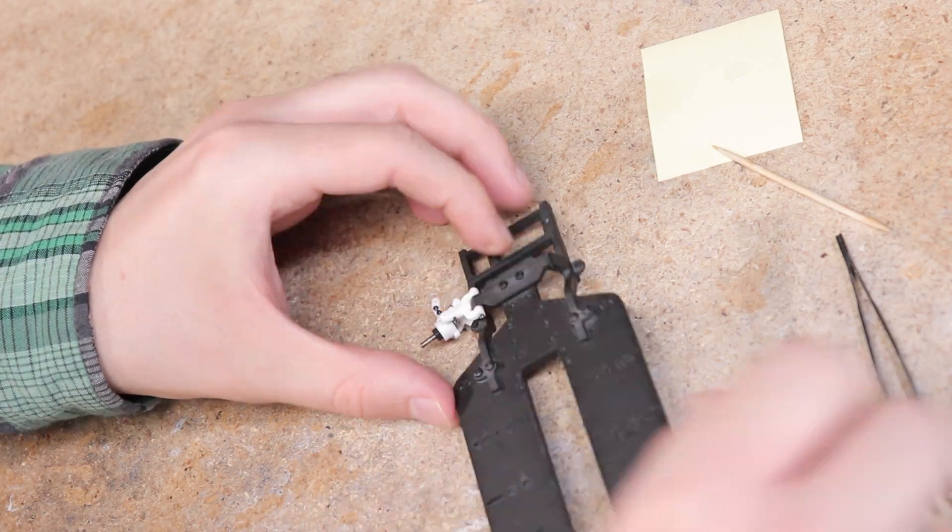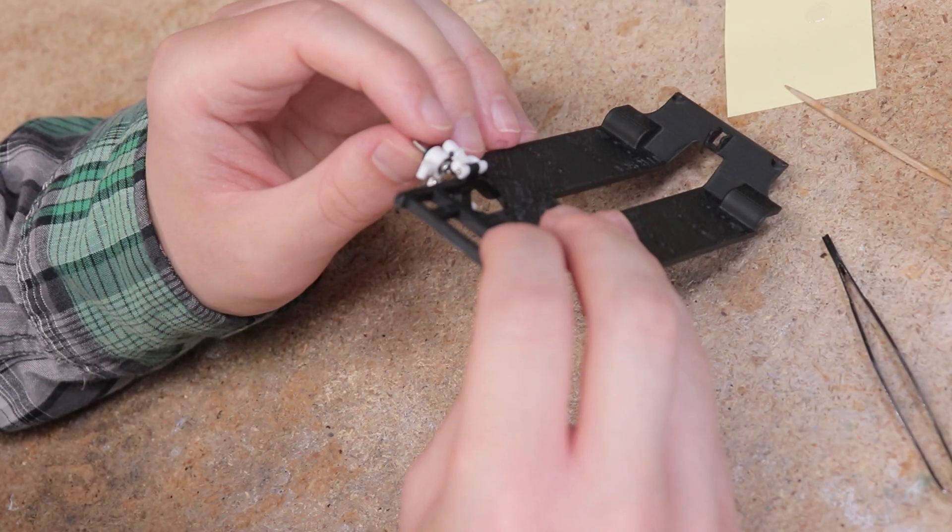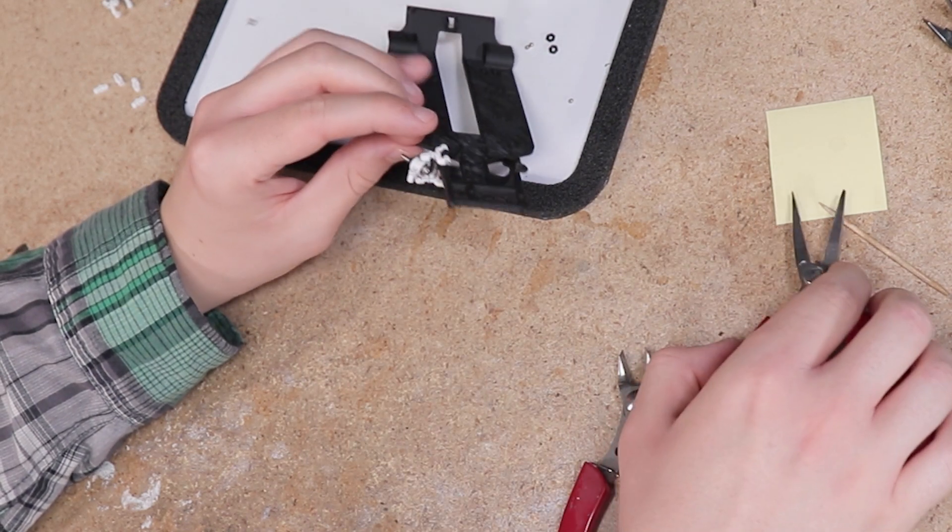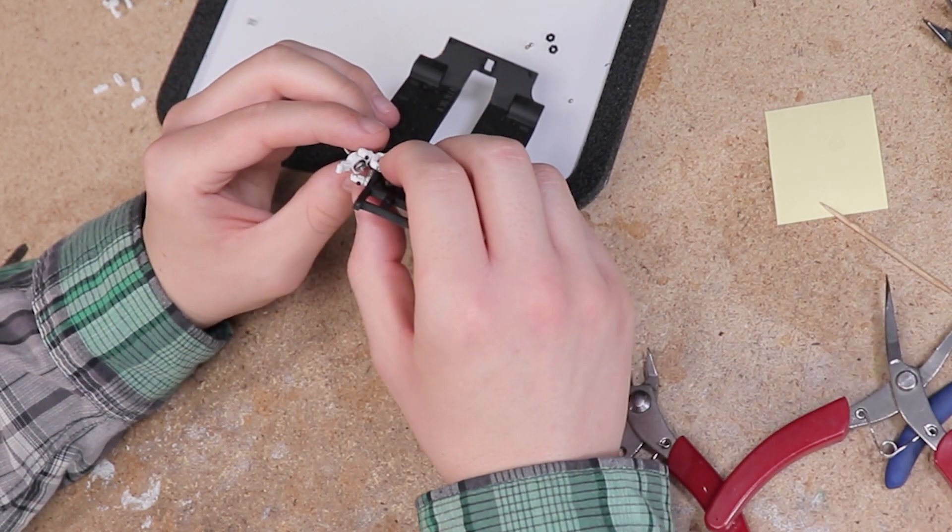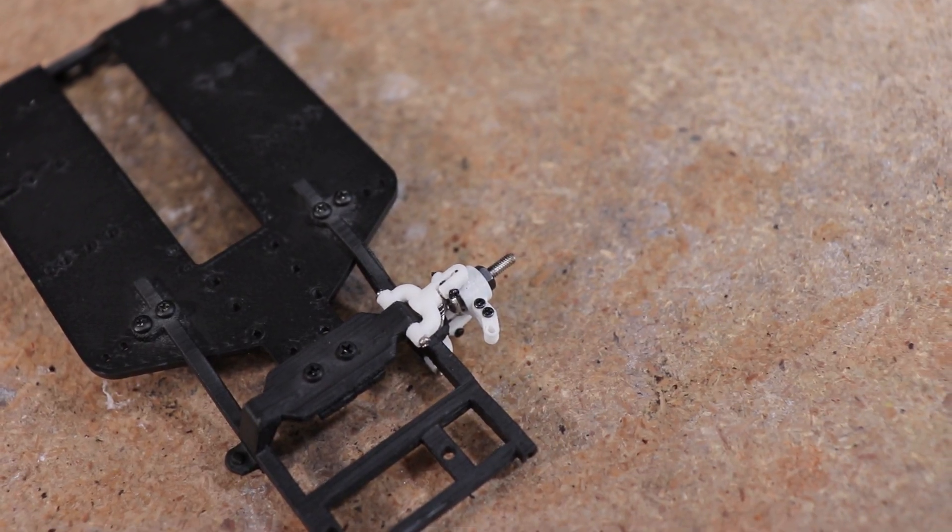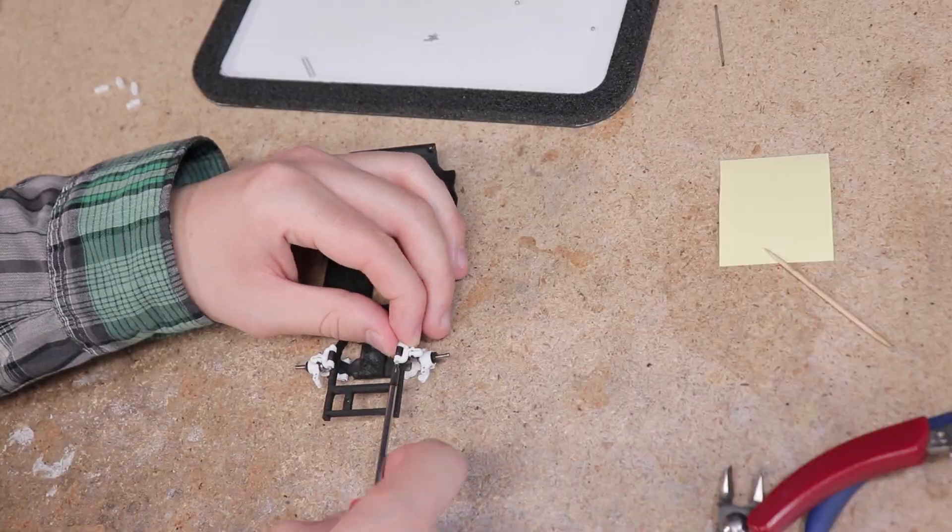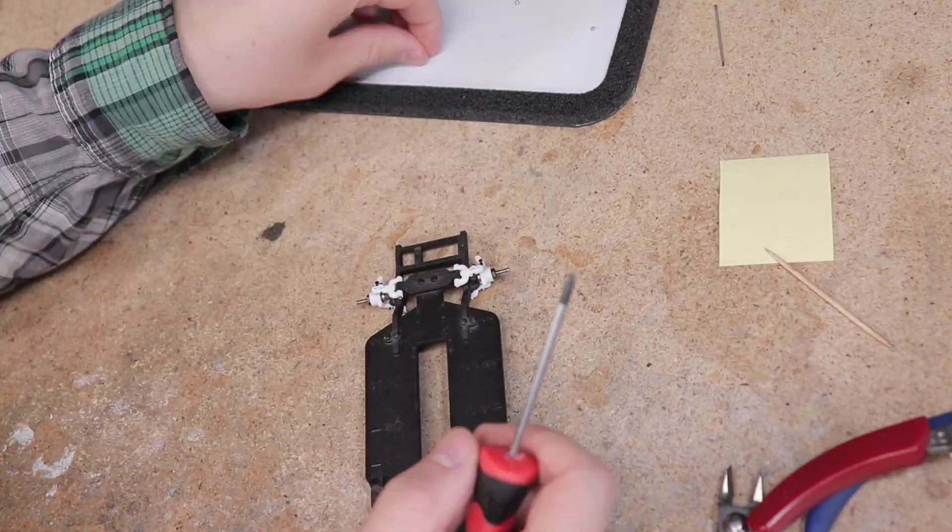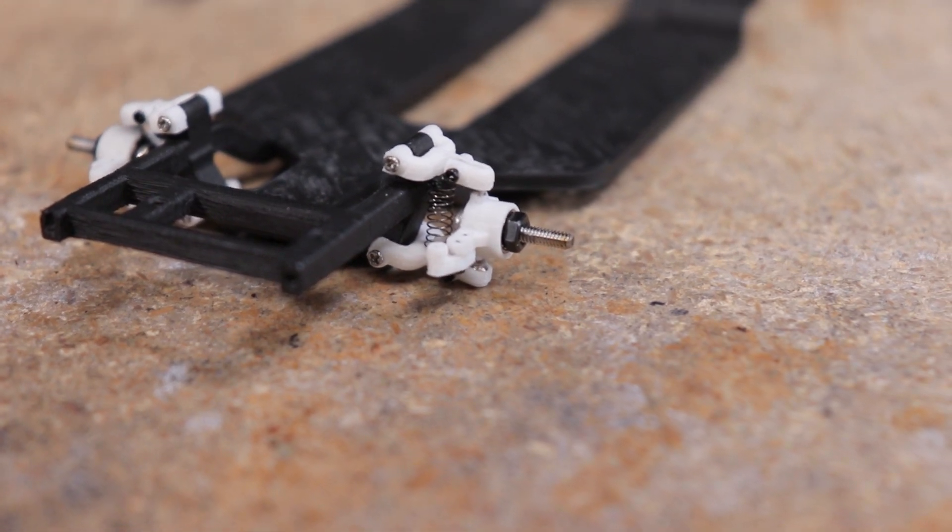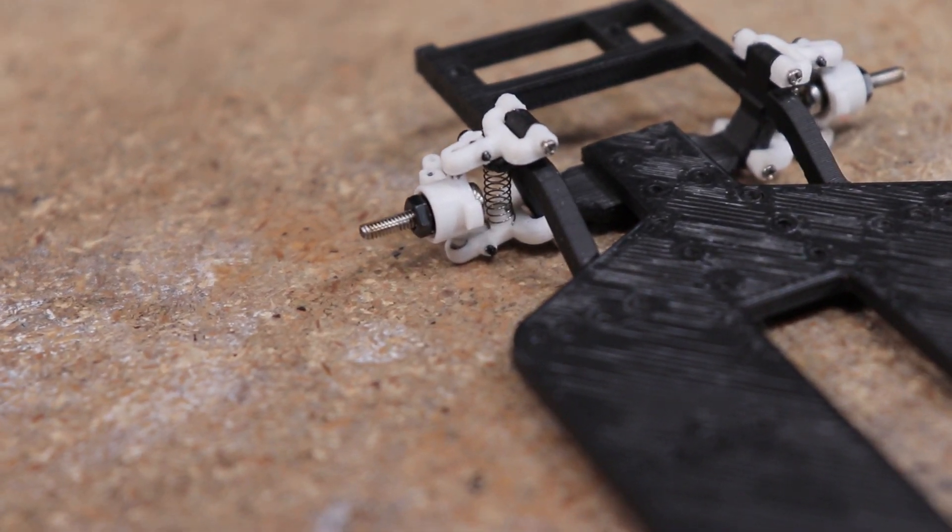So let's go ahead and take a look at the front end with the frame rails and the upper and lower A-arms. It really reminds me of the real thing.